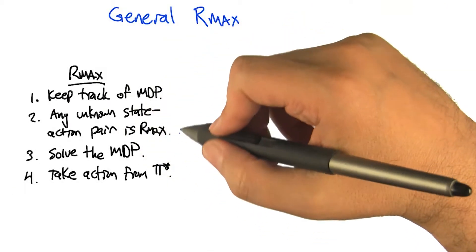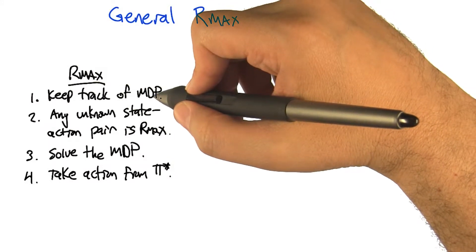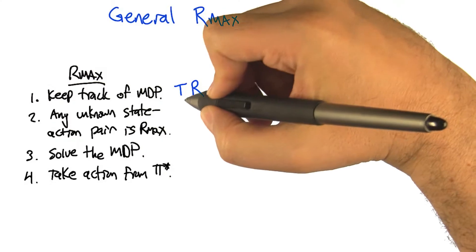So I copied over the RMAX algorithm that we had before, and it went like this. We're going to keep track of the MDP, which is to say we're going to have an estimate of the transitions and rewards for all the state action pairs.